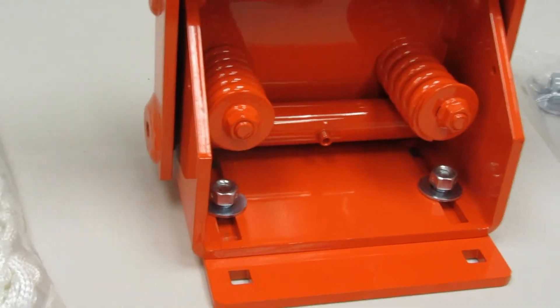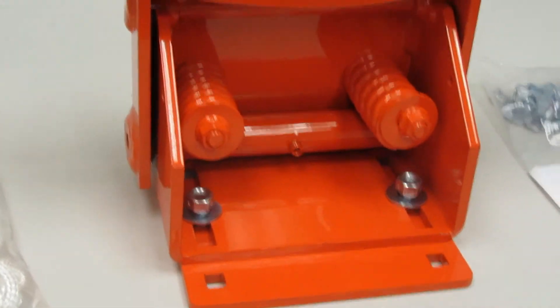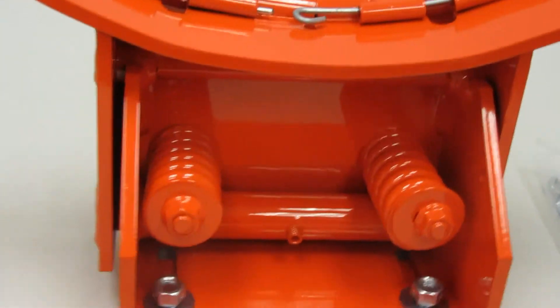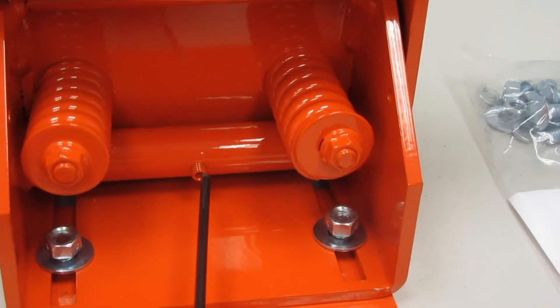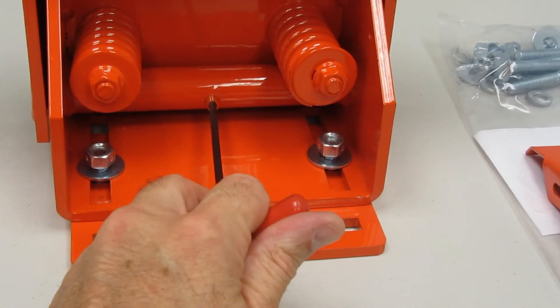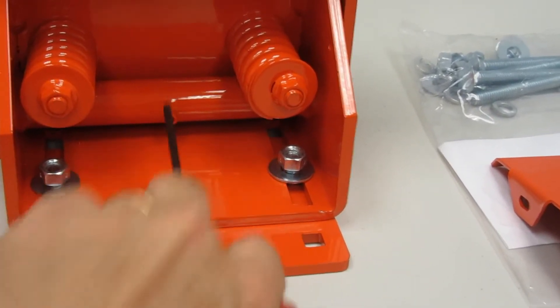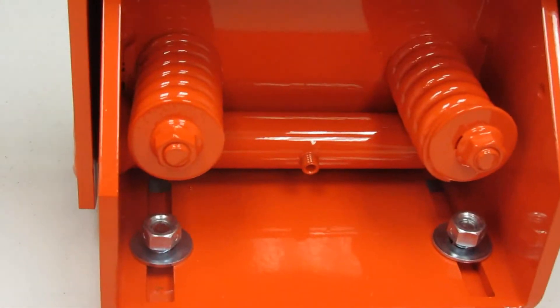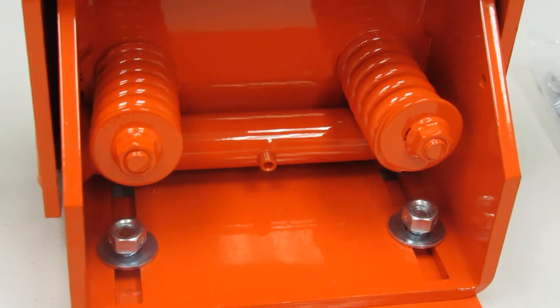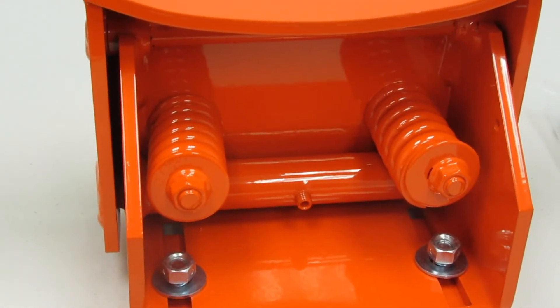The detent mechanism also has an adjustable tension feature, so as this rim ages and the detent mechanism loosens up, you'll be able to take an allen wrench and tighten this screw which will bring the detent mechanism back up to new performing standards in terms of breakaway tension.